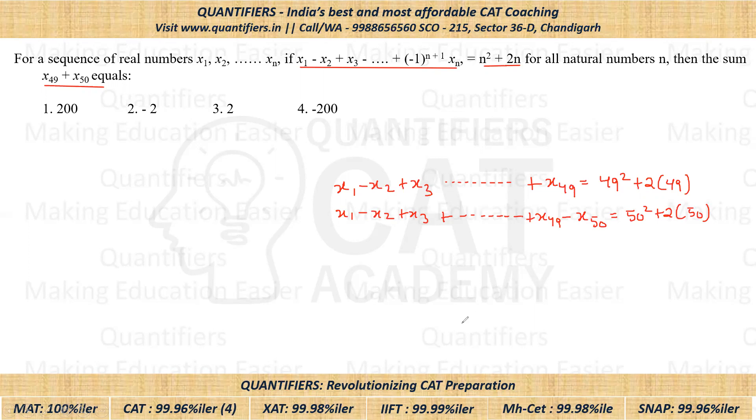Now students, let us subtract this second equation from the first equation. So if we subtract, this will get cancelled out. I hope everyone is getting this. So finally, we'll have negative of negative x₅₀.